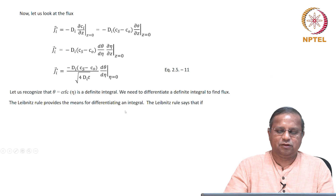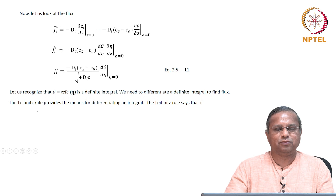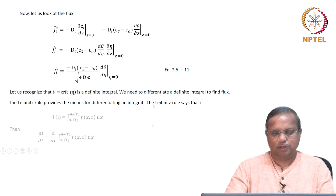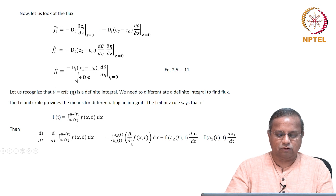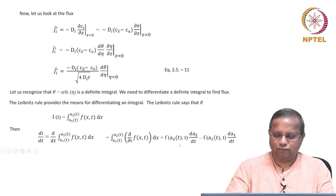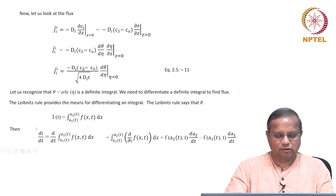If you recall your math course, the Leibniz rule provides a way of differentiating an integral. The Leibniz rule states: d/dt of the integral from a₁(t) to a₂(t) of f(x,t) dx equals the integral of ∂f/∂t dx, plus f evaluated at the upper limit times da₂/dt, minus f evaluated at the lower limit times da₁/dt.